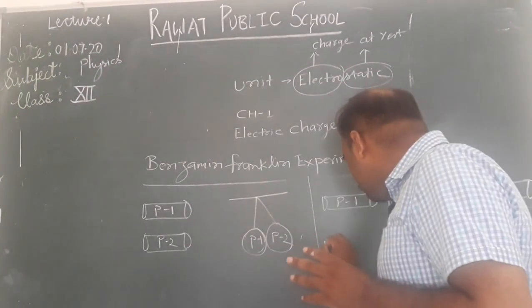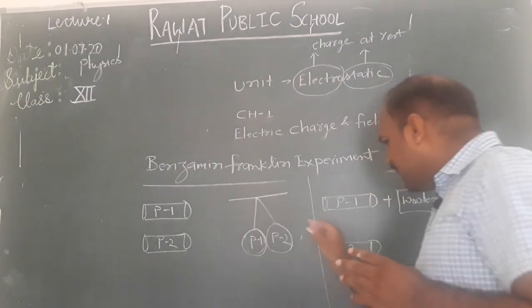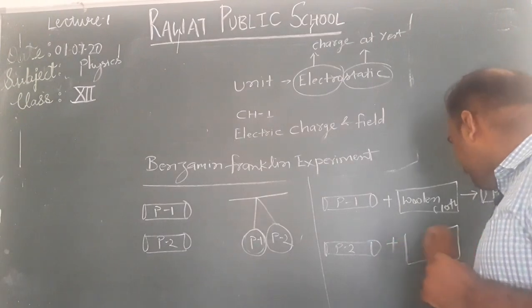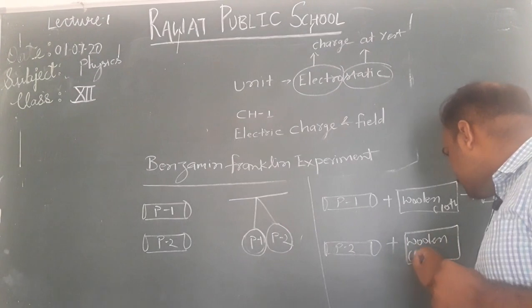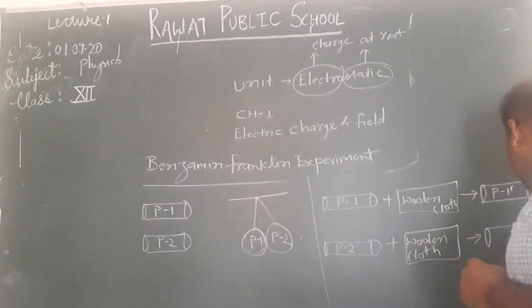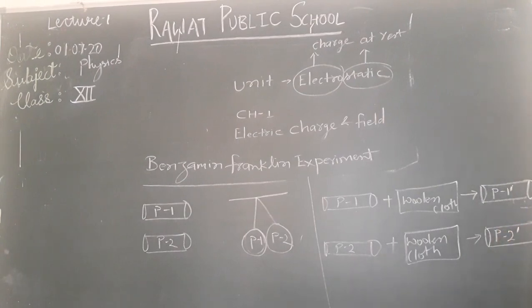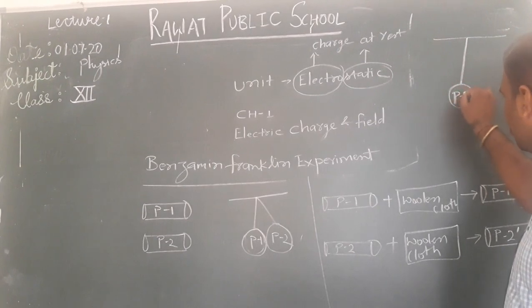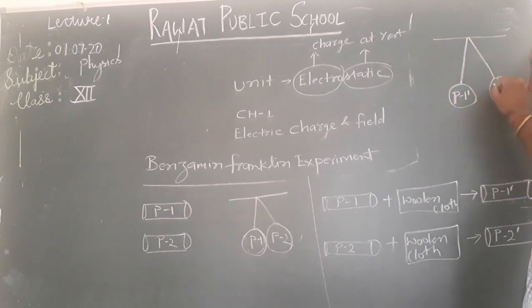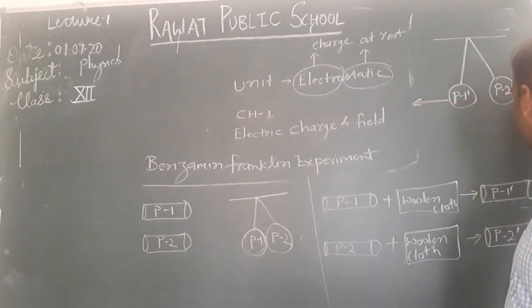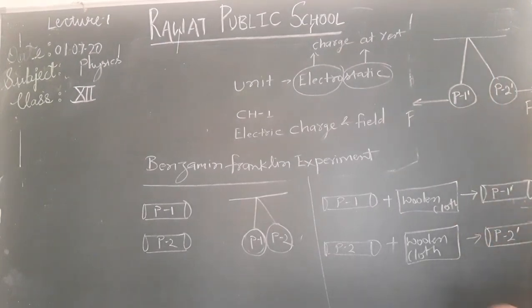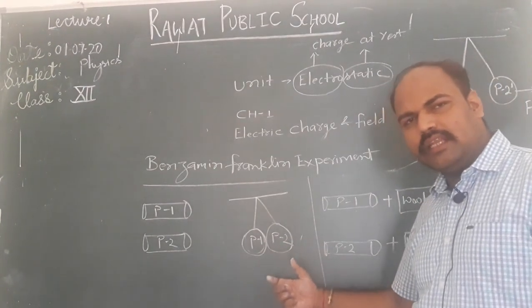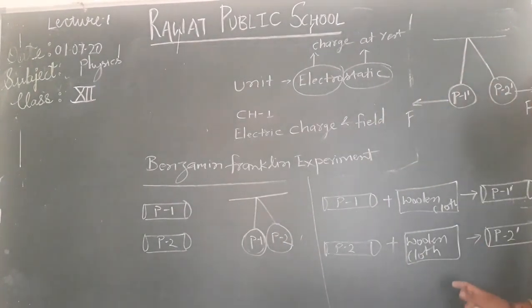A similar process is applied to the second plastic rod P2, which is rubbed with a separate woolen cloth and also becomes charged. Now we suspend P1 dash and P2 dash from a common point and find that both plastic rods repel each other. Since both were charged using the same method, similar nature of charges repel each other.